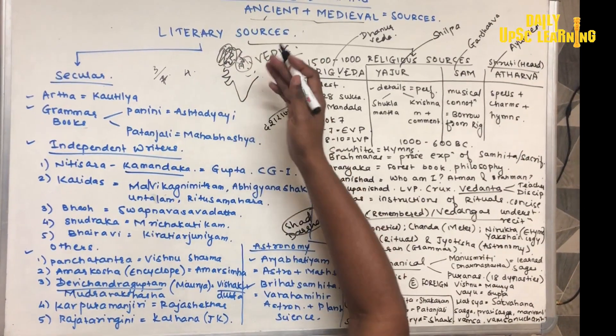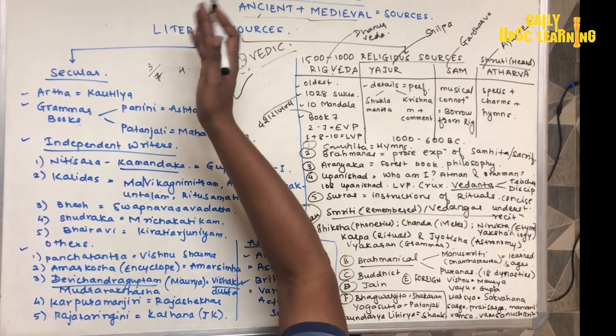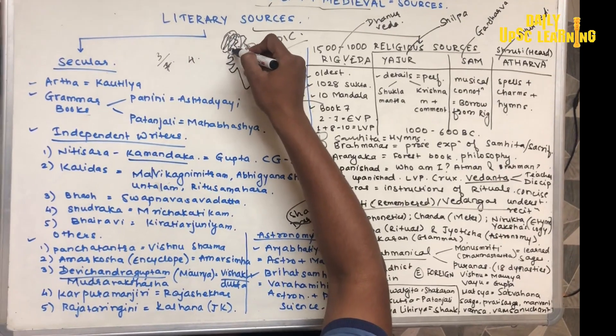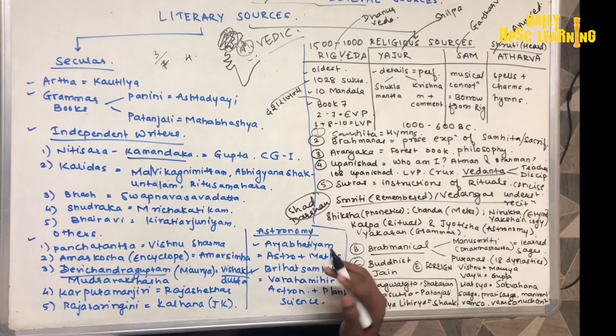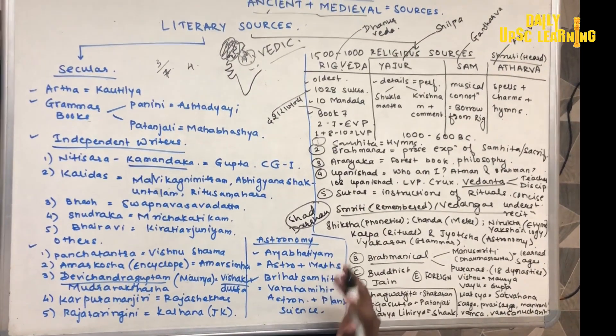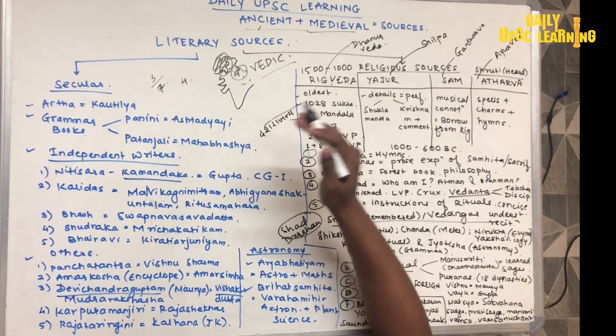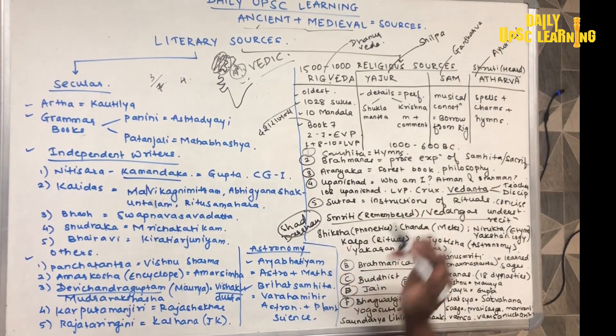You should remember that the Rigvedic period was the Saptasindavay area — that is, Indus, Jhelum, Chenab, Ravi, Beas, and Satlaj. And the Indo-Gangetic plains correspond to the Later Vedic period.